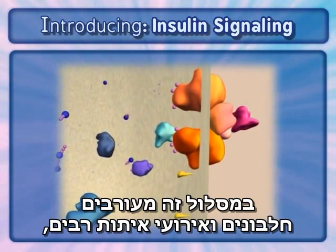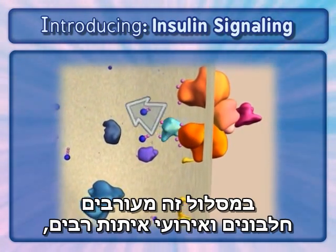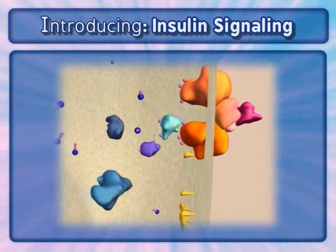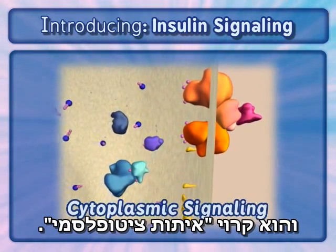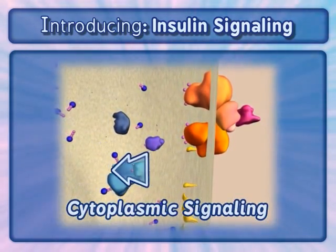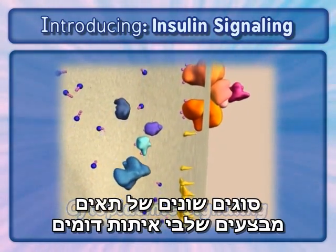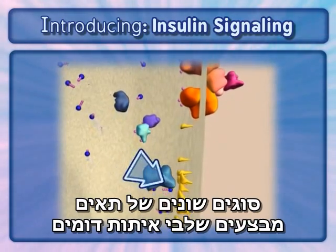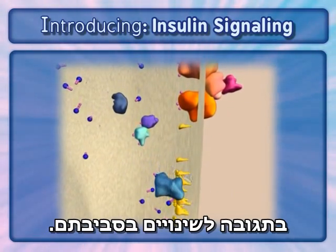This pathway involves multiple proteins and signaling events. This is termed cytoplasmic signaling. Different types of cells perform similar signaling steps in response to changes in their environment.